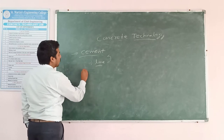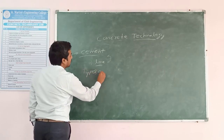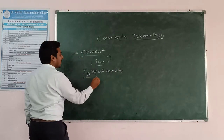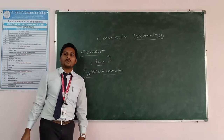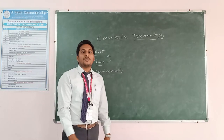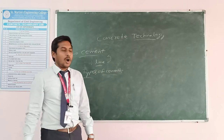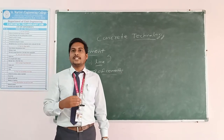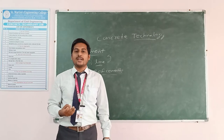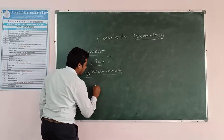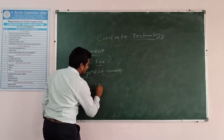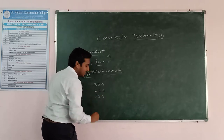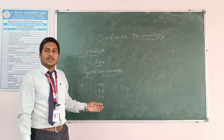There are 10 types of cement. The first one is Ordinary Portland Cement. In Ordinary Portland Cement, we are having 3 types: that is 33 grade, 43 grade, and 53 grade. These are the 3 types of Ordinary Portland Cement.